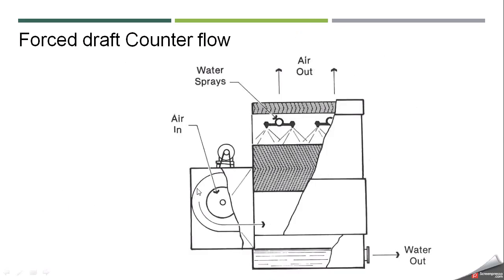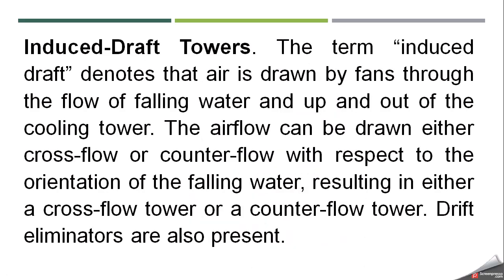This picture shows a cut view of a forced draft counter flow tower: the air intake blower or fan is installed on the side, water is sprayed from the top, air moves in and interacts with the falling water, absorbs heat, exits from the top, and cooled water is collected in the basin.